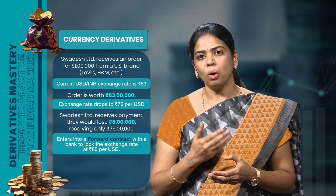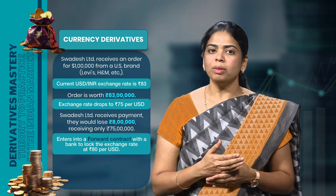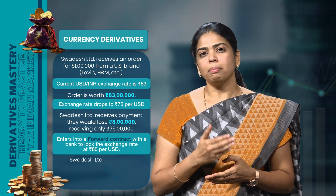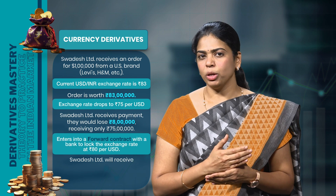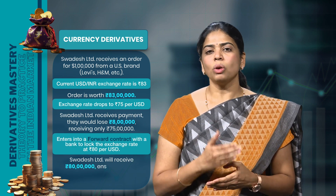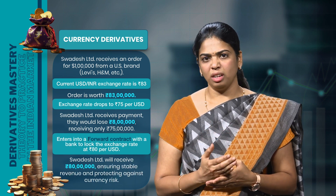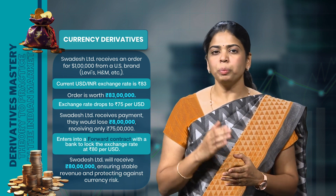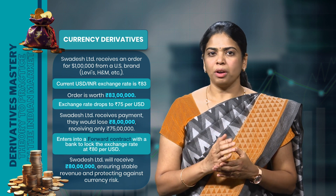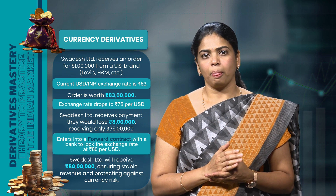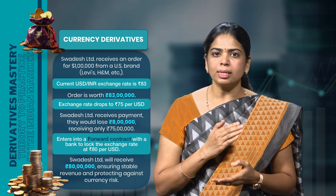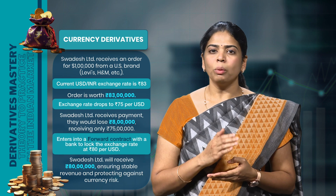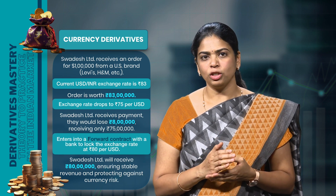This contract allows them to lock the exchange rate today for converting 1 lakh US dollars into Indian rupees after 3 months. Suppose the bank offers a rate of Rs.80 per USD. Regardless of the exchange rate in the market after 3 months, Swadesh Limited will be able to convert 1 lakh US dollars at Rs.80 per USD, securing Rs.80 lakhs. By doing this, the company locks in its exchange rate and ensures stable revenue, allowing it to plan major expenses and margins with certainty.